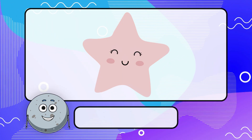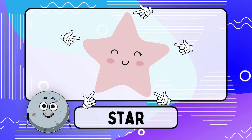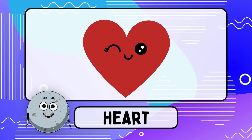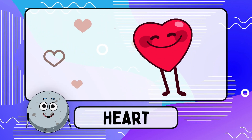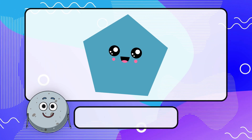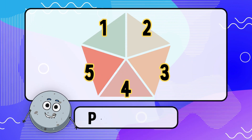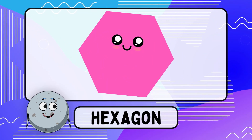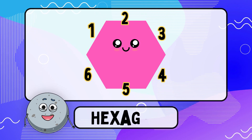Star — the star has many points. Heart — the heart is a lovely shape. Pentagon — the pentagon has five sides. Hexagon — the hexagon has six sides.